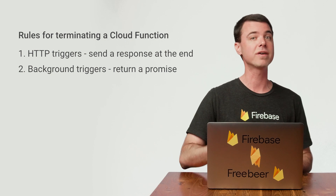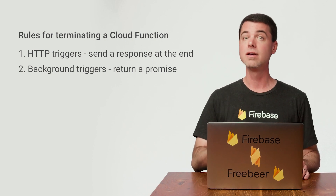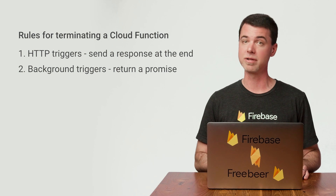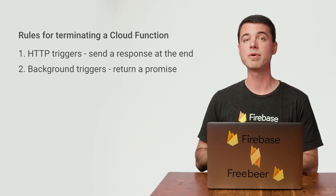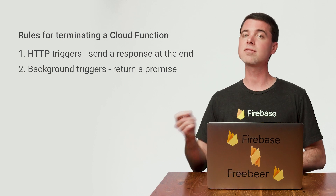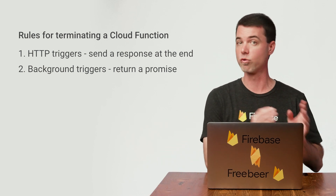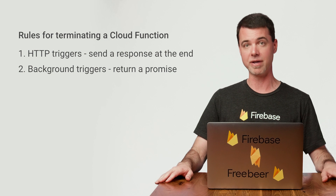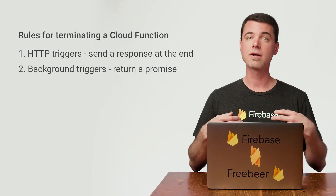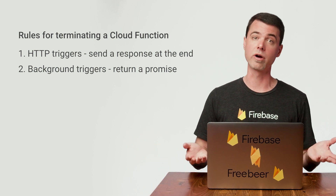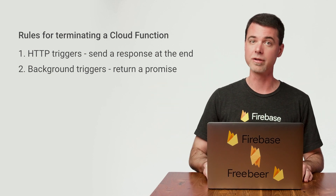But you can't leave any promises dangling in your function without proper handling. Otherwise, your pending work may not complete the way you expect. When you return a promise from a background function like this, it tells Cloud Functions to wait until the promise becomes fulfilled or rejected before moving on and cleaning up that function. If you return any other type of value, Cloud Functions will ignore it and terminate the function immediately. All right, enough talk. Let's look at some code.